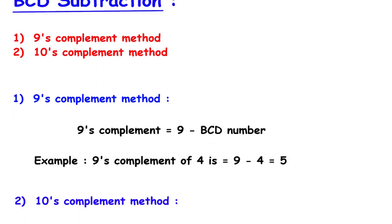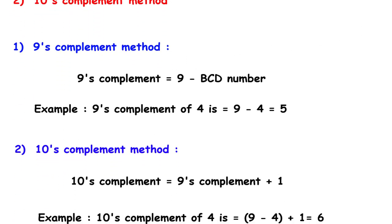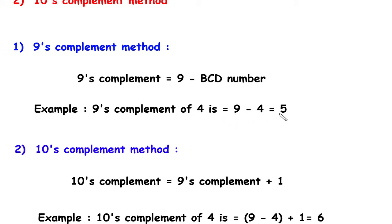What is the 9s complement method? In the 9s complement method, it is equal to 9 minus the BCD number. For example, the 9s complement of 4 is 9 minus 4, which equals 5.